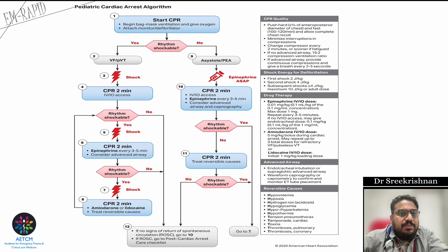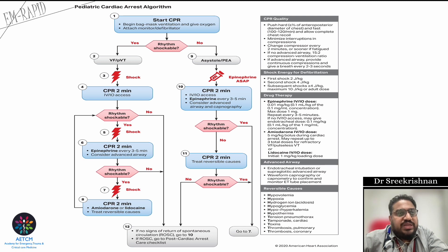Now we look at the pediatric cardiac arrest algorithm, continuing from the BLS algorithm. We are continuing CPR and bag-mask ventilation — 15 compressions to 2 breaths — for up to two minutes. As soon as an AED or defibrillator is available, connect it and assess whether the rhythm is shockable or non-shockable.